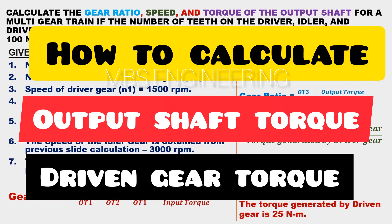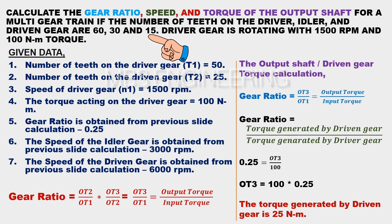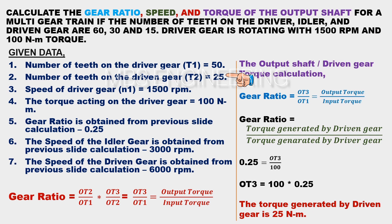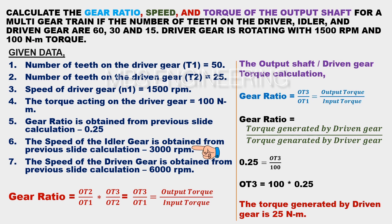We will discuss the torque of the output shaft. Given data: T1=60, T2=30, T3=15, N1=1500 RPM, torque acting on driver gear=100 Nm, gear ratio=0.25 from the previous calculation, and the speed of the idler gear=3000 RPM from the previous calculation. The gear ratio equals OT2 divided by OT1 multiplied by OT3 divided by OT2, so the gear ratio equals OT3 divided by OT1, which equals output torque divided by input torque.